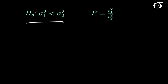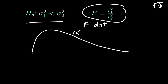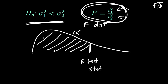If our alternative is in the other direction — that sigma 1 squared is less than sigma 2 squared — we use similar logic. The smaller the value of the F statistic, the greater the evidence against the null and in favor of this alternative. If S1 squared is quite a bit less than S2 squared, that gives evidence against the null. So our p-value is the probability of getting this value or something even less — the area to the left of the test statistic.